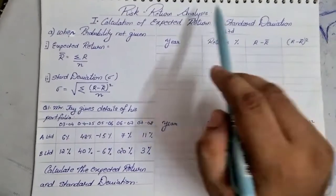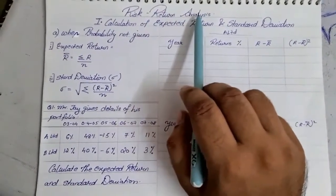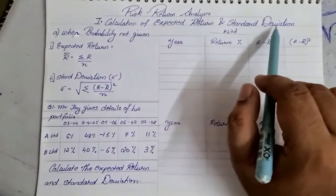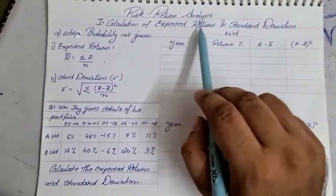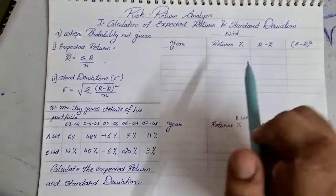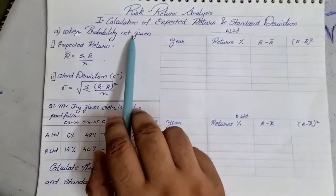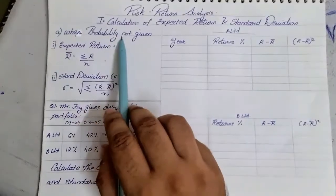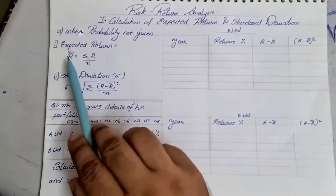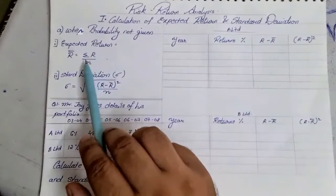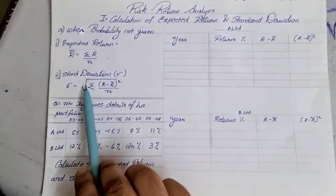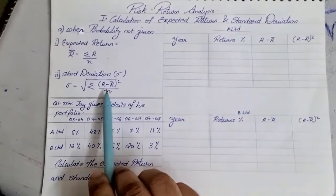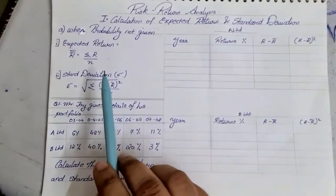The very first type of sum is based on risk and return analysis — calculation of expected return and standard deviation. There are two types of sums: number one when probability is not given, and one where it is given. The formula for expected return is R-bar = sigma R upon N, and the standard deviation formula is the root of sigma (R minus R-bar) squared upon N.